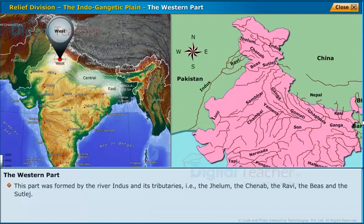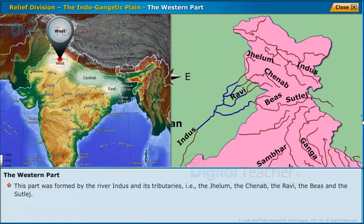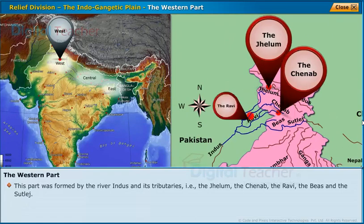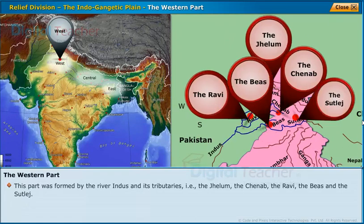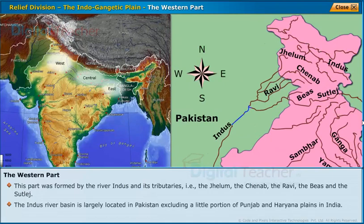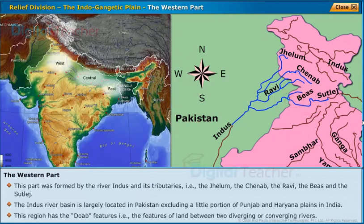The western part of the Indo-Gangetic Plain was formed by the river Indus and its tributaries. The Indus river basin is largely located in Pakistan, excluding a small portion of Punjab and Haryana plains in India. This region has the dual features of land between diverging and converging rivers.